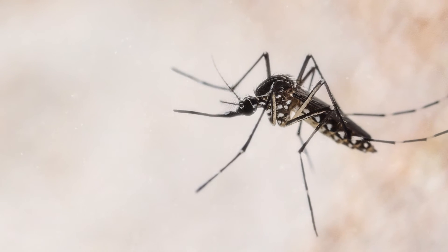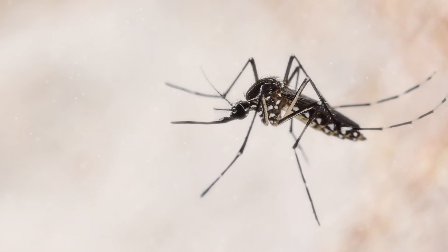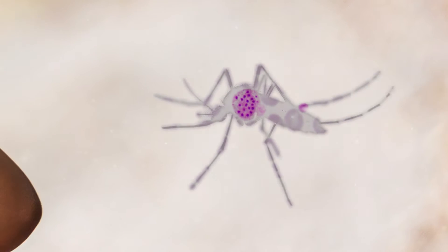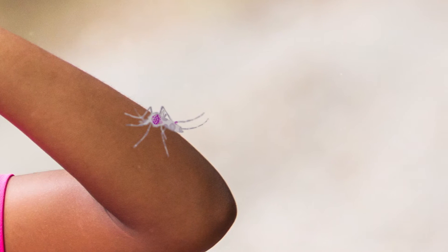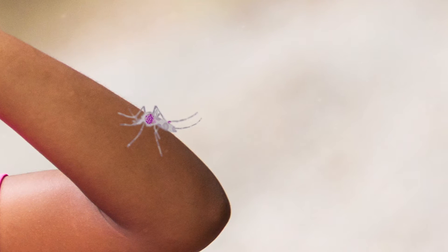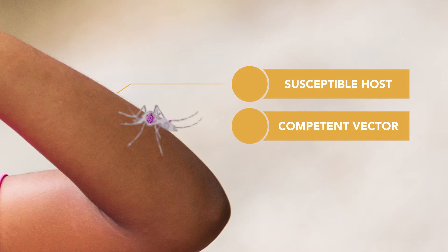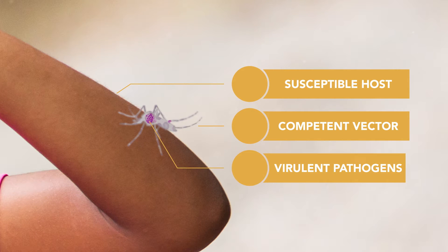Vector-borne diseases are caused by pathogens, such as bacteria or viruses, that are often transmitted by insect vectors, such as ticks or mosquitoes. These diseases are interesting to study because they require a cycle of pathogen-host interaction that leads to human infection. Successful infection requires the presence of a susceptible host, a competent vector, and virulent pathogens interacting in an appropriate environment.